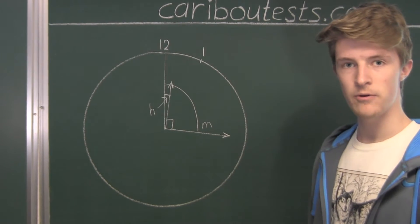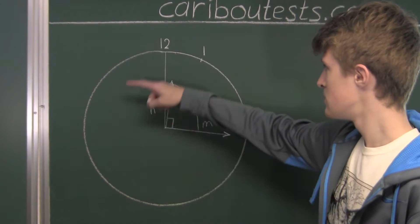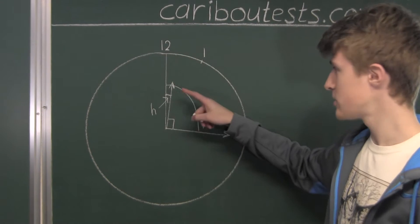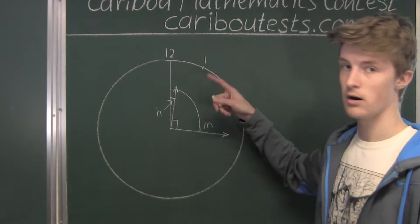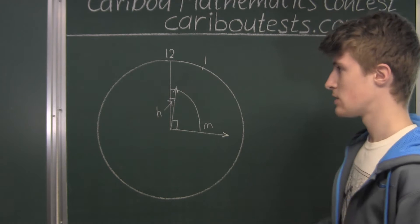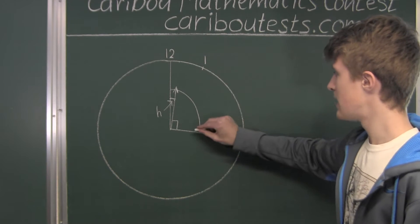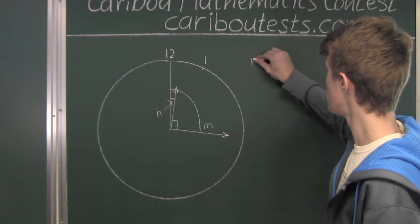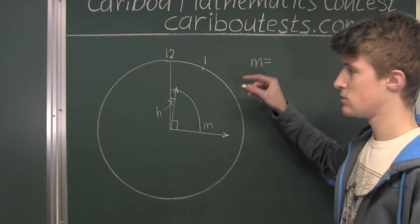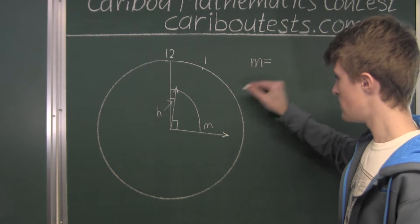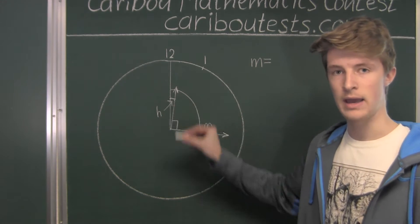Well in one full hour, the minute hand does a full circle, but the hour hand only does one twelfth of a circle. So therefore, the angle that the minute hand has to move is equal to twelve times the angle that the hour hand must move.